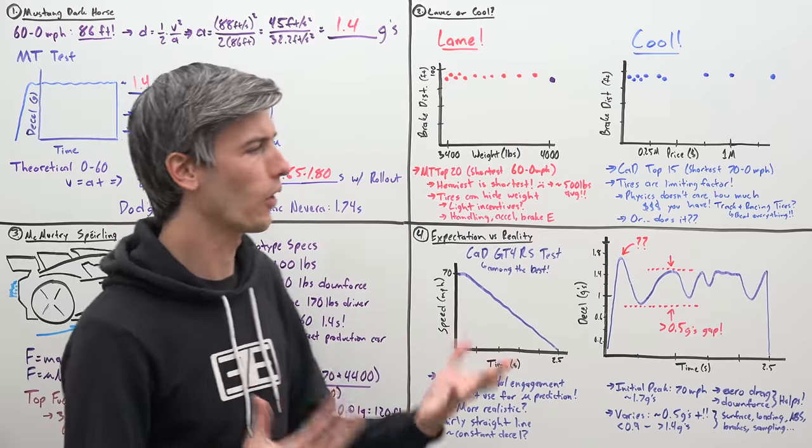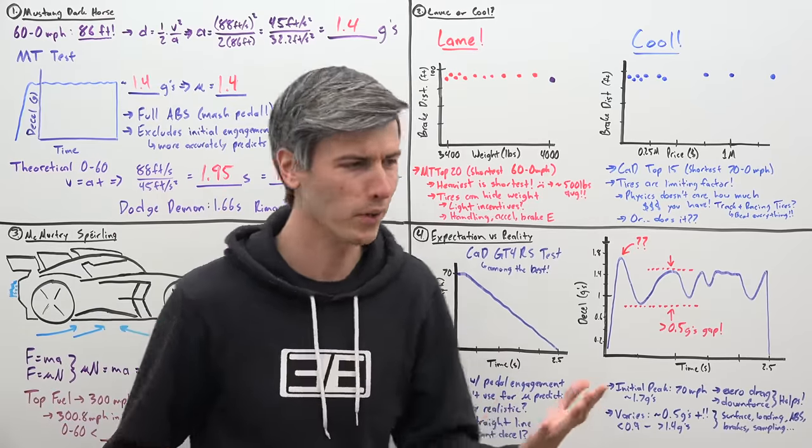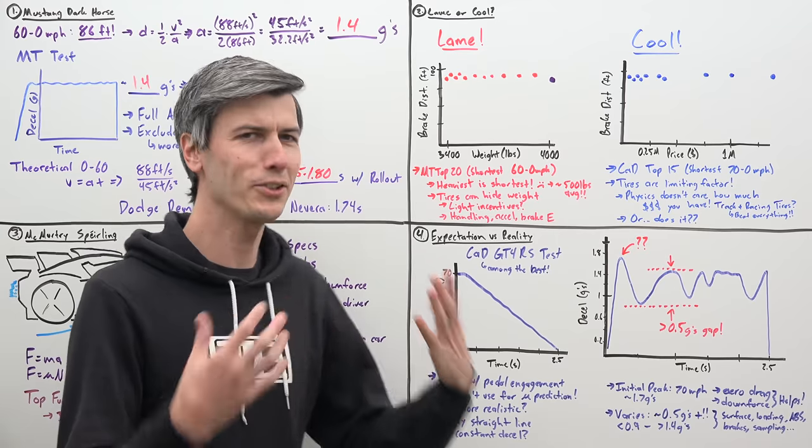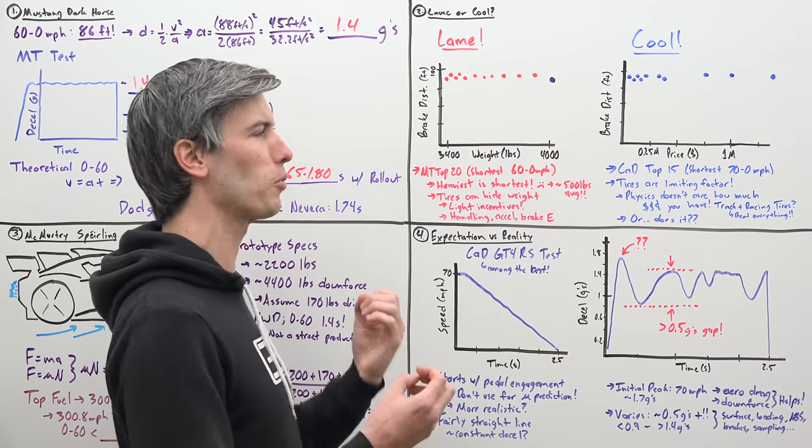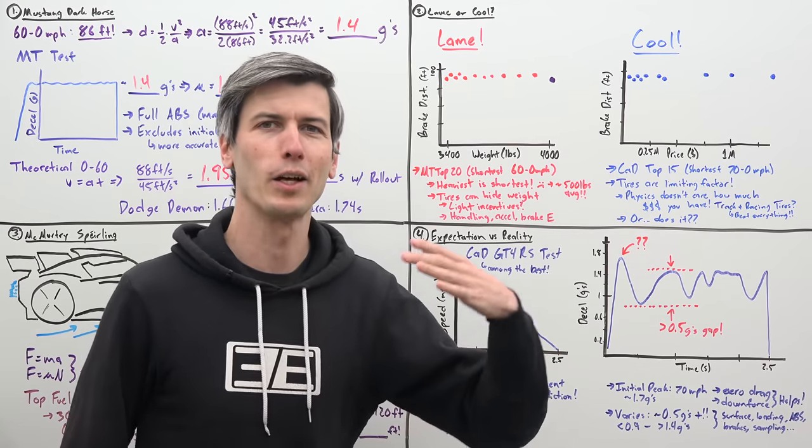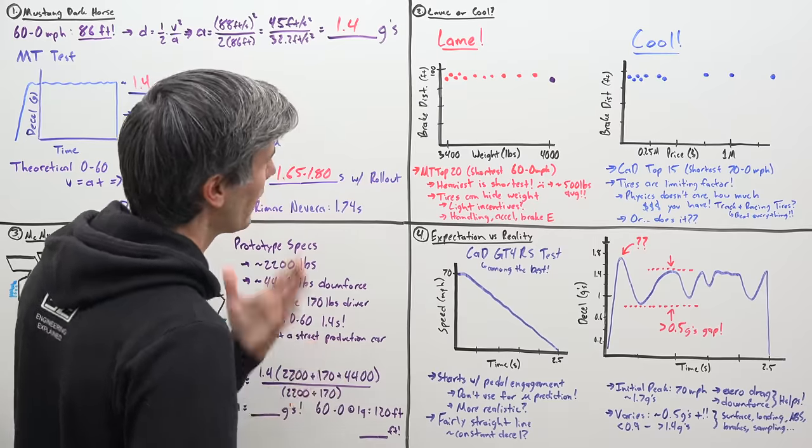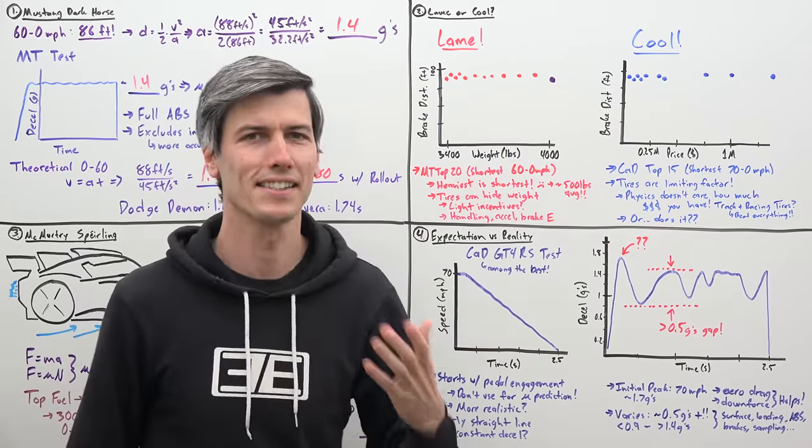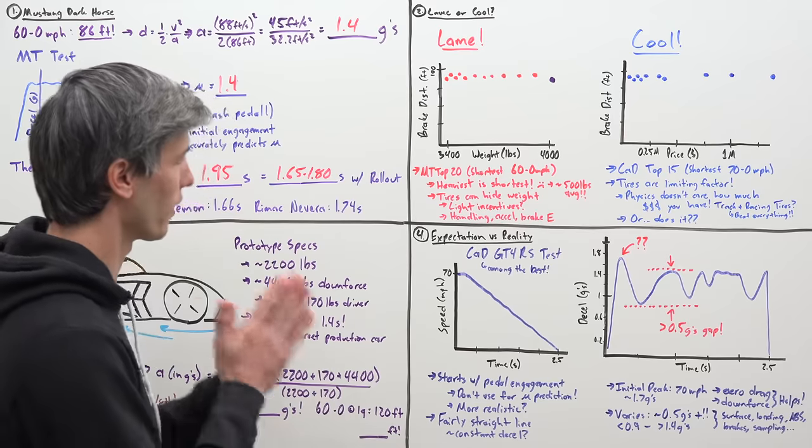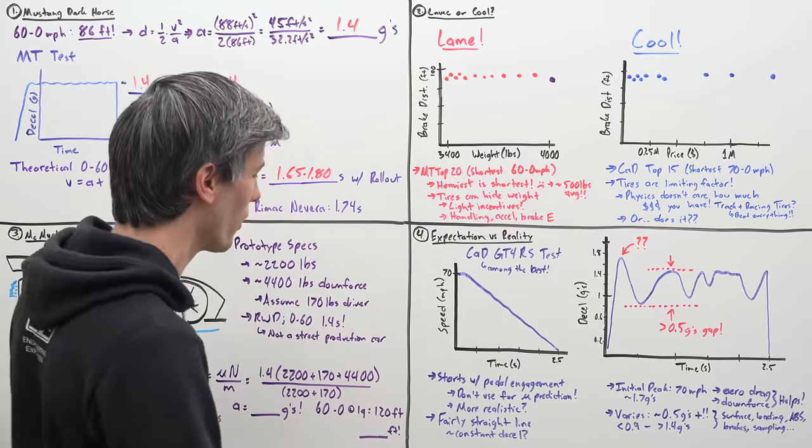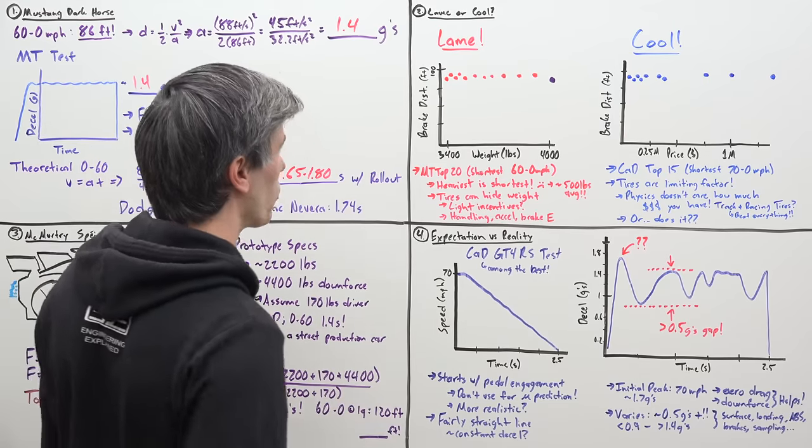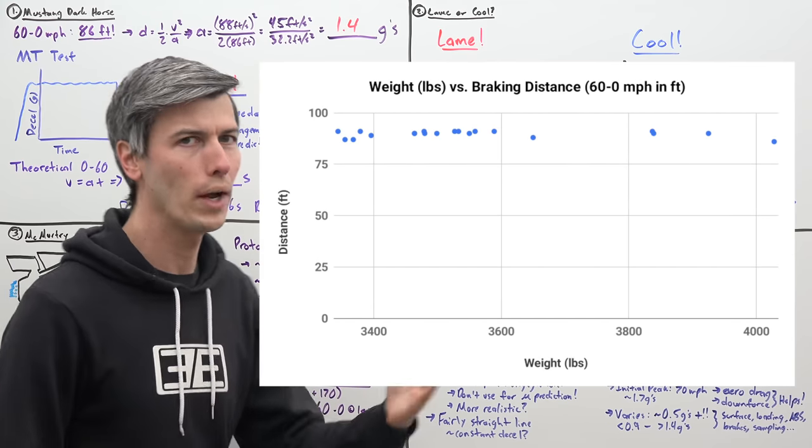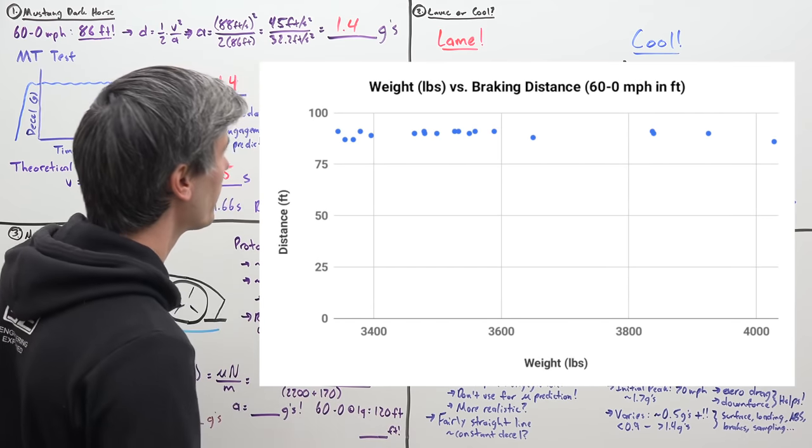So getting back to the Mustang Dark Horse, when they set this record, part of me thinks, is this lame or is it actually cool? And I do think that it's cool, but there is a really lame implication that comes along with this record. So I asked Motor Trend if they could send me the top 20 shortest braking distances they have in all of their testing. And thank you to Motor Trend, they did send that data over.